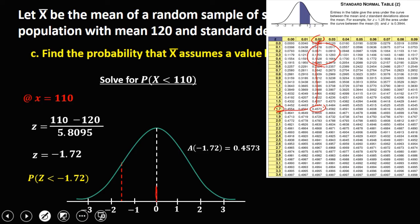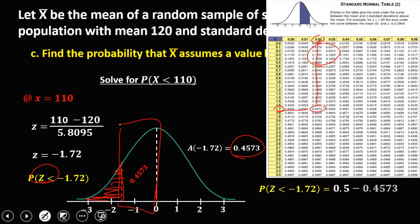The area from the mean to −1.72 is 0.4573. Since we need the area to the left (less than), we subtract from 0.5: 0.5 − 0.4573 = 0.0427, or 4.27%.